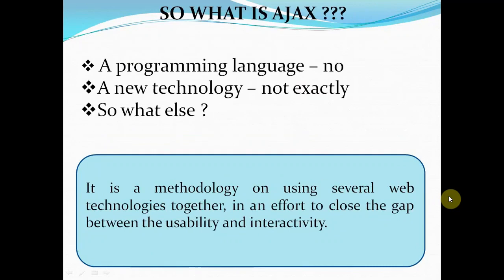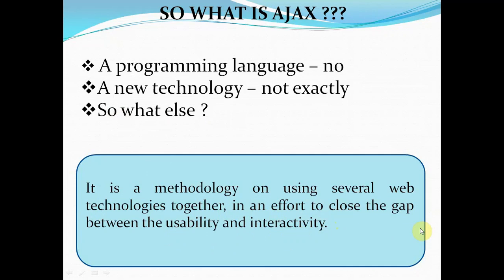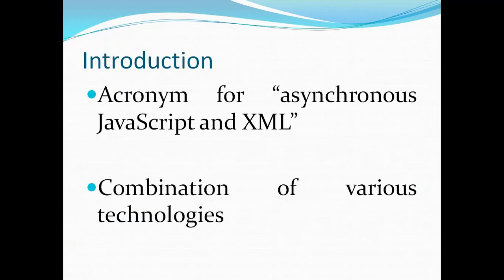So what is Ajax? First point: is it a programming language? The answer is no. Ajax is not a programming language. Is Ajax a technology? Not exactly — we cannot say technology. So Ajax is a methodology of using several web technologies together in an effort to close the gap between usability and interactivity. It is a combination of different technologies.